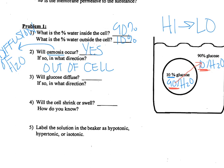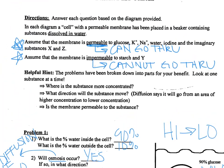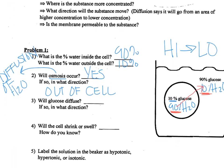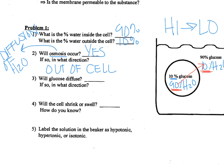The next question says, will glucose diffuse? Again, check the directions — is the membrane permeable to glucose? Yes, it is. Next question: do we have a high and a low of glucose — 90 versus 10? Yes, we do. Therefore we can write yes on the line; glucose will diffuse. Remember, we're moving from high to low, so put your pencil on the high number, 90%, and draw the arrow towards the low number of 10%. So glucose is going to move into the cell.